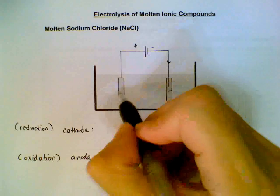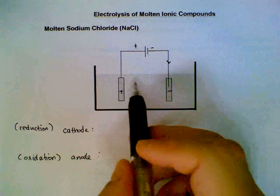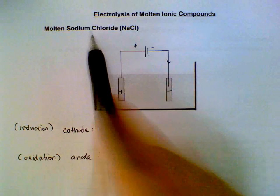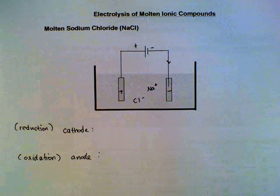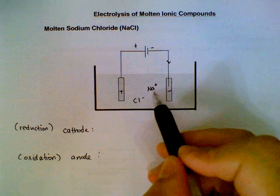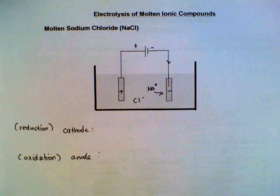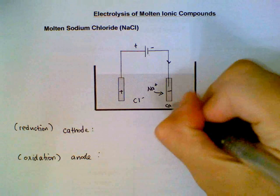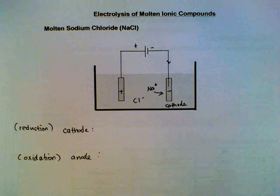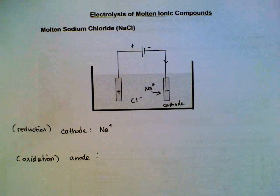The electrolyte consists of molten sodium chloride, so we have sodium ions and chloride ions. The ions being positively charged will be attracted to the electrode that is negatively charged. That attracts cations we can call a cathode.